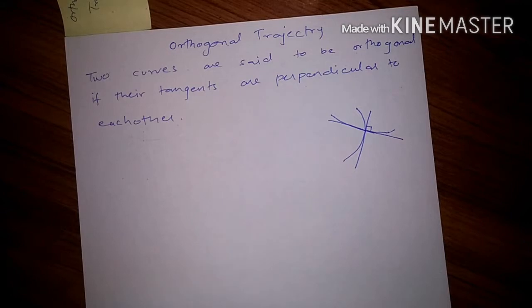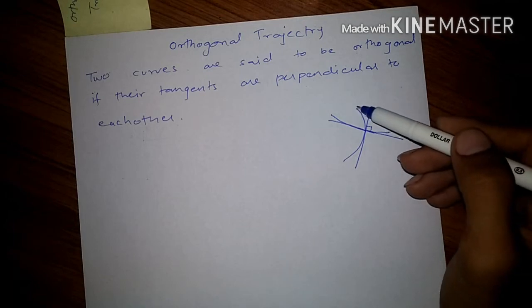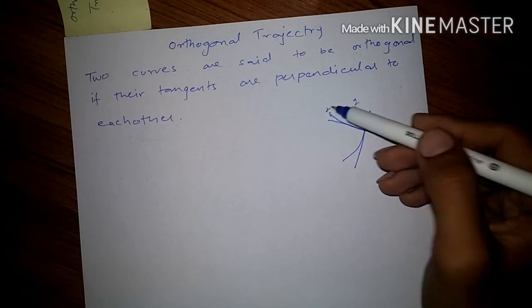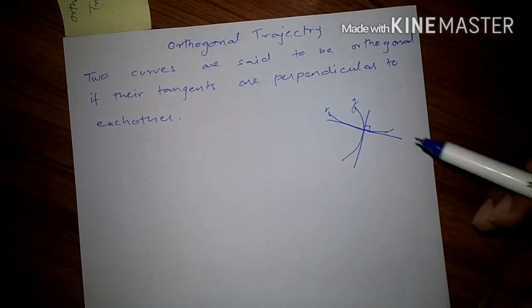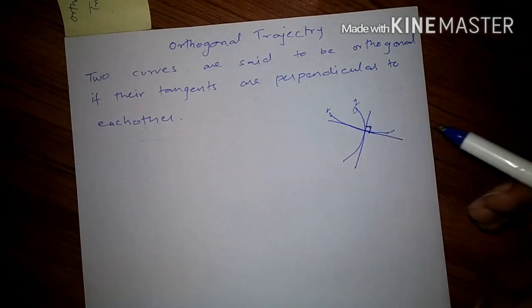Today we are going to learn about orthogonal trajectories. Let's have a look at its simple definition. The definition says two curves are said to be orthogonal if their tangents are perpendicular to each other.